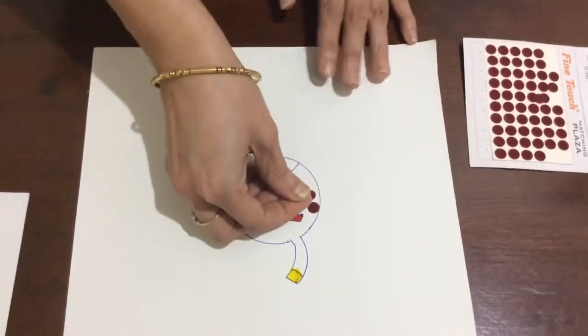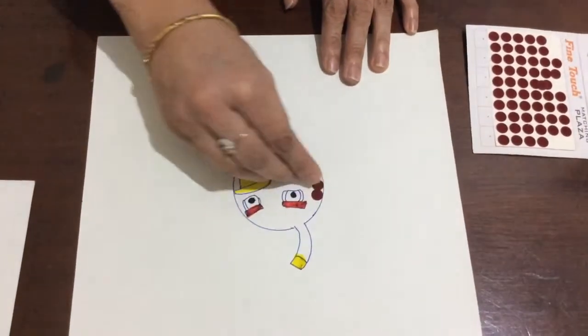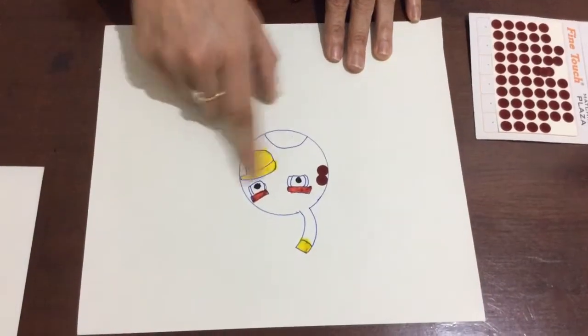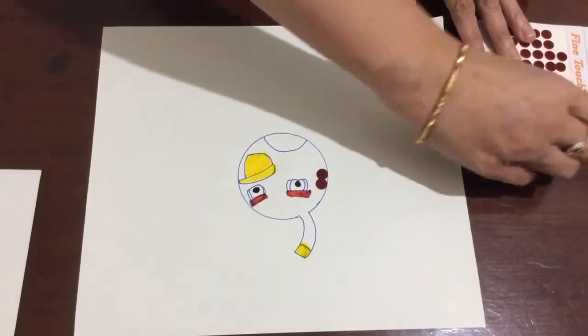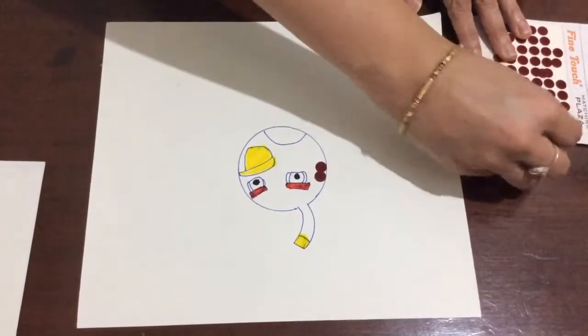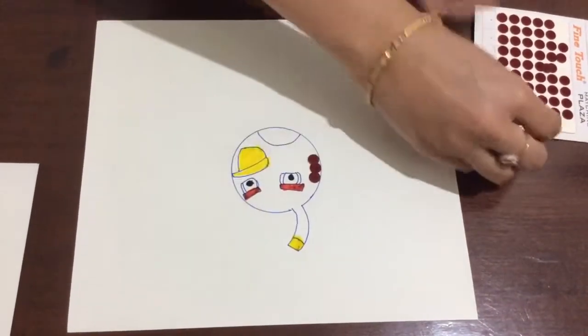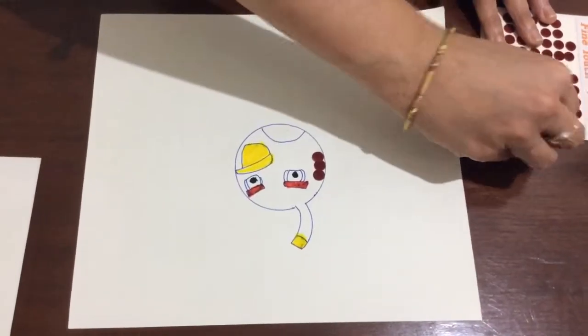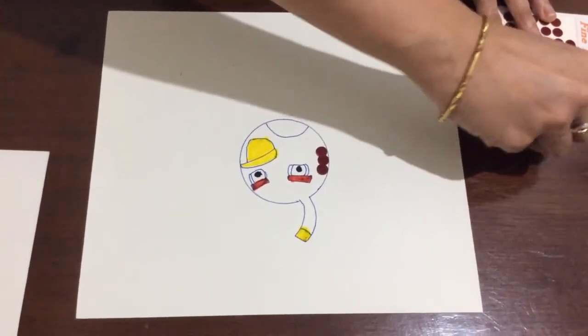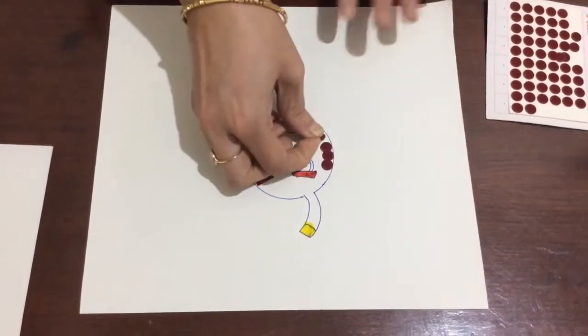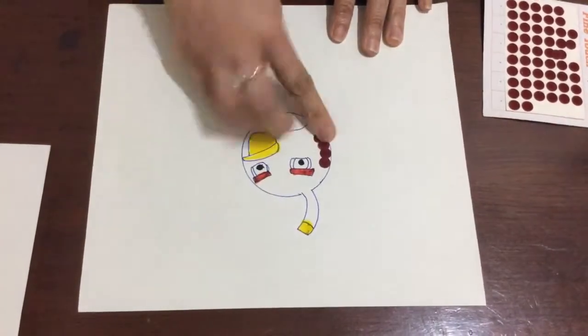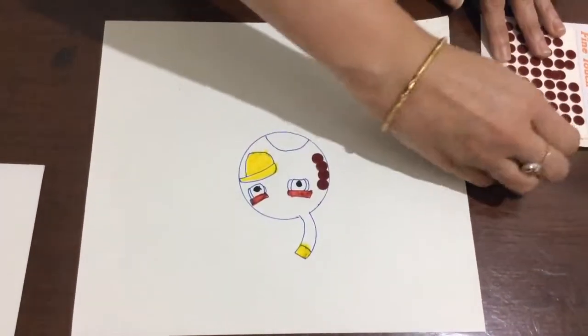It is good if you start doing it from the outline, from the outer portion and then move inside. Ask your child to place the bindis very closely so that the white spaces are minimized. This as you can see is enhancing the eye-hand coordination in children and you can see the effect also.